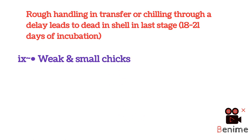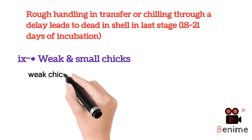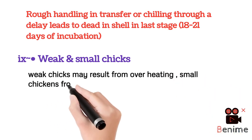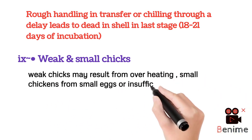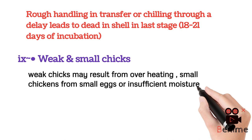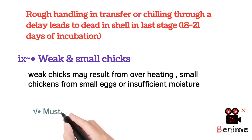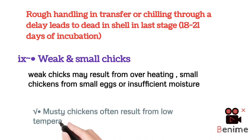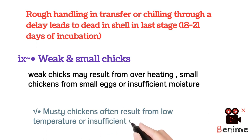What are the possible causes of eggs hatching with weak chicks or small chicks? Weak chicks may result from overheating of the eggs. Smaller chickens can come from small eggs, or insufficient moisture in the incubator may cause smaller chickens. Sometimes musty chickens are hatched, which is often the result of low temperature and insufficient ventilation.